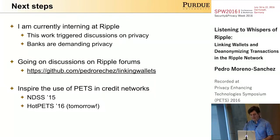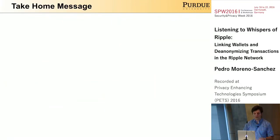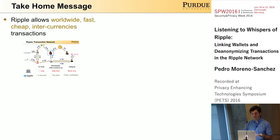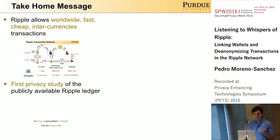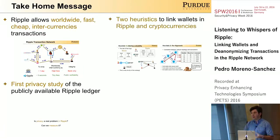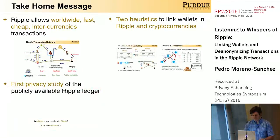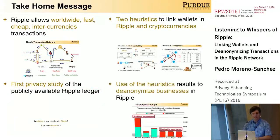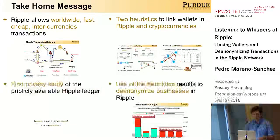In the last 30 seconds, let me share the key take-home message. Ripple allows worldwide, fast, cheap, and inter-currency transactions. We have presented the first privacy study of the publicly available Ripple ledger. We defined two heuristics that link wallets not only from the Ripple network but also from different cryptocurrencies. And finally, we used our results to de-anonymize businesses running right now in the Ripple network. Thank you for your attention and I'll be happy to take questions.